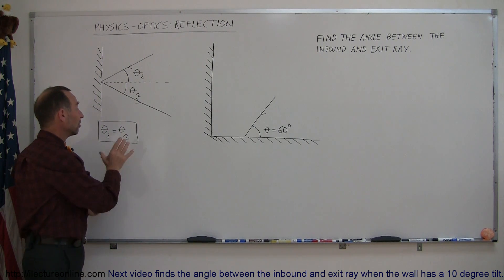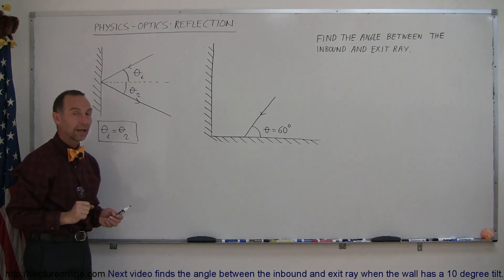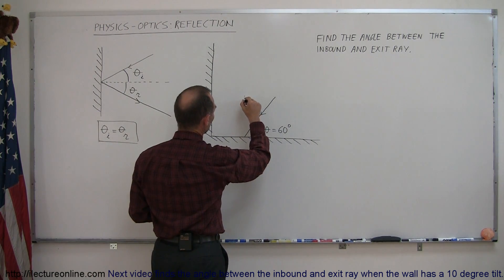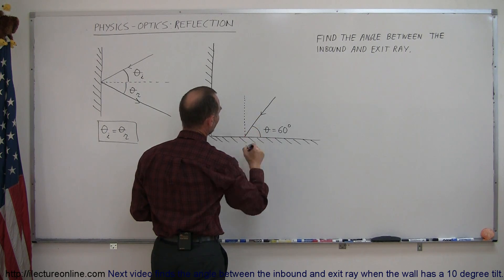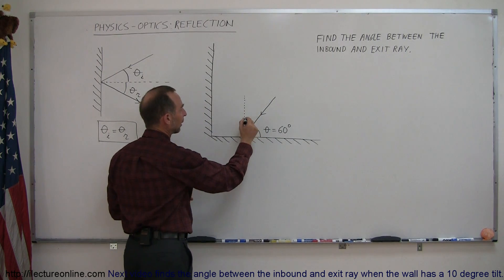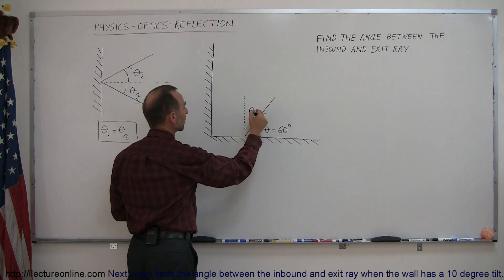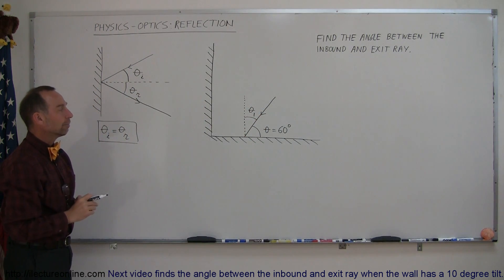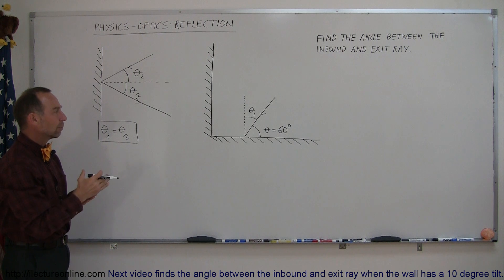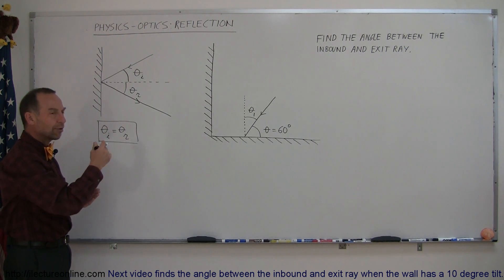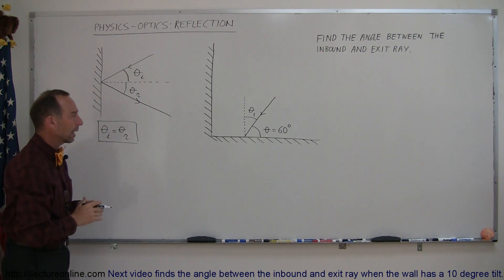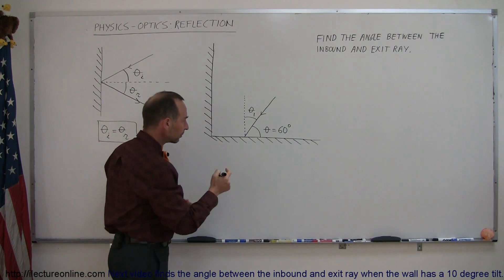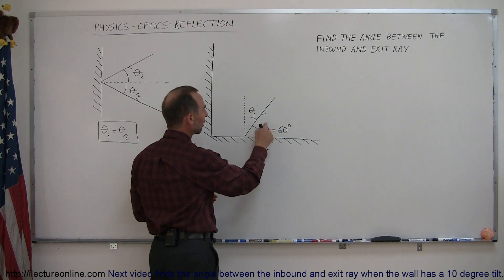At each reflection we're going to use this principle and always draw the normal line to the surface where the reflection occurs. Here's the normal, and we define this as the inbound ray angle or the incident angle. I like to number them 1, 2, 3, 4, 5, 6 — so the inbound angle is 1, the exiting angle is 2, and so forth throughout all the surfaces. So if the incoming ray is at 60 degrees with the horizontal,